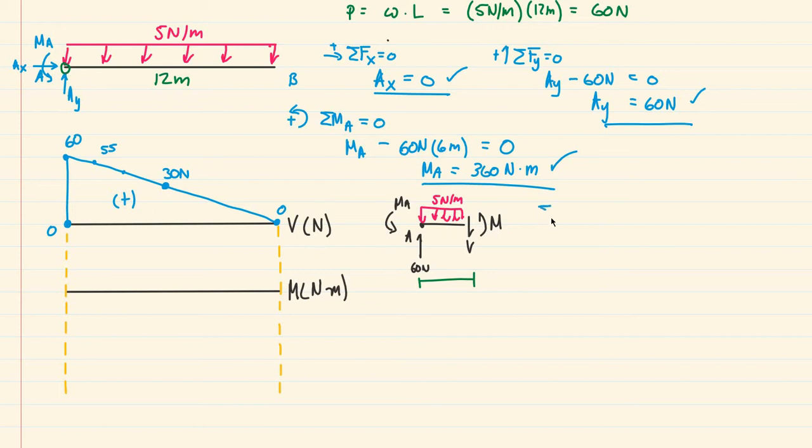So I can simply take the moments about this segment and set that equal to 0. I have our positive M there and then I have this positive MA, right this 360 newton meter and if I solve for M we would get negative MA. That means M would be equal to negative 360 newton meters. So our moment right at point A is negative 360 newton meters and it's 0 up here.